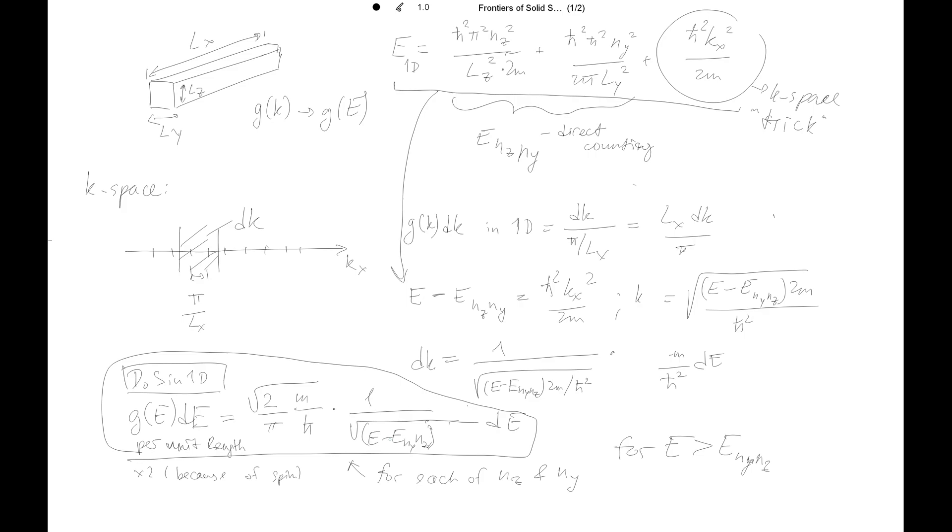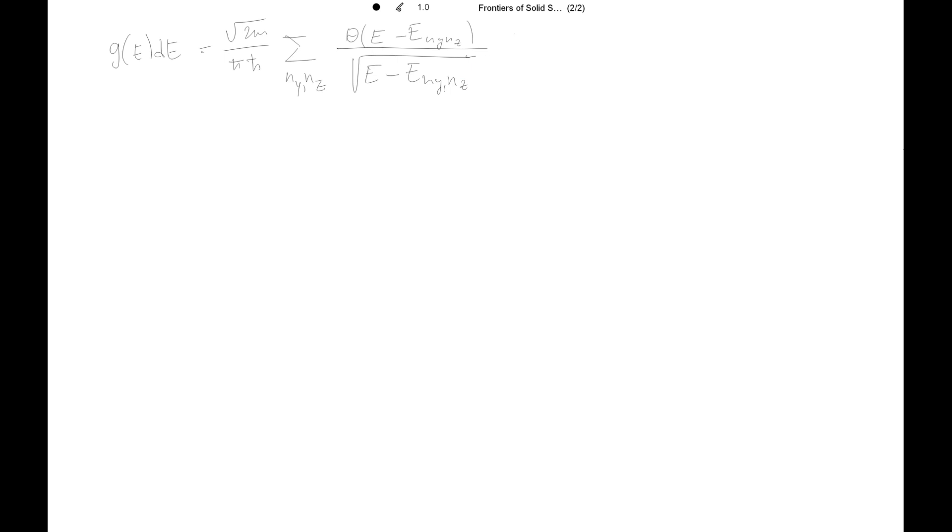So then the total density of states in one dimension is g(E)dE equals √(2m)/(πℏ). Then we do the summation over ny and nz. And we use the Heaviside step function, E minus Eny,nz divided by square root of E minus Eny,nz. That's the one-dimensional case.